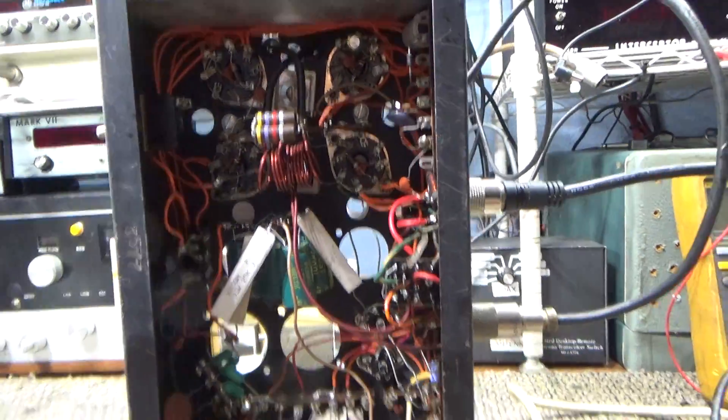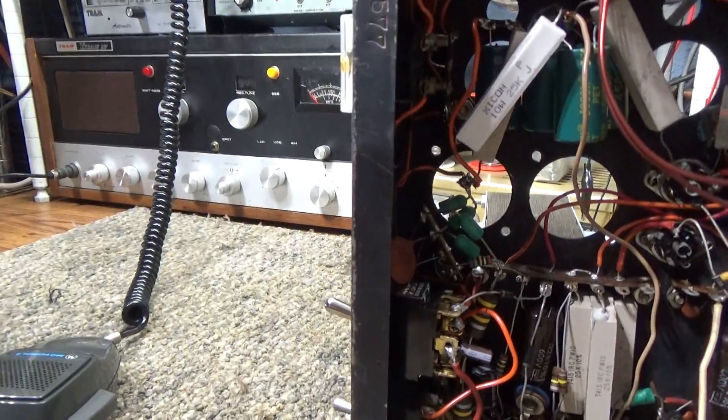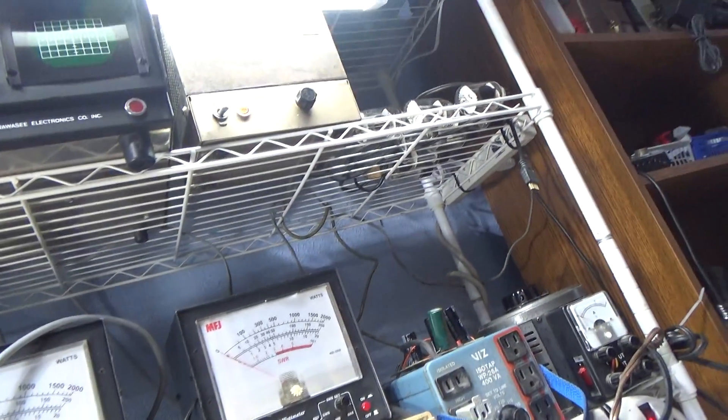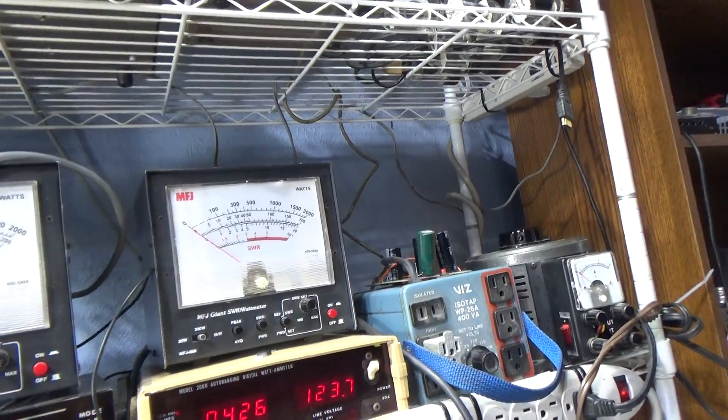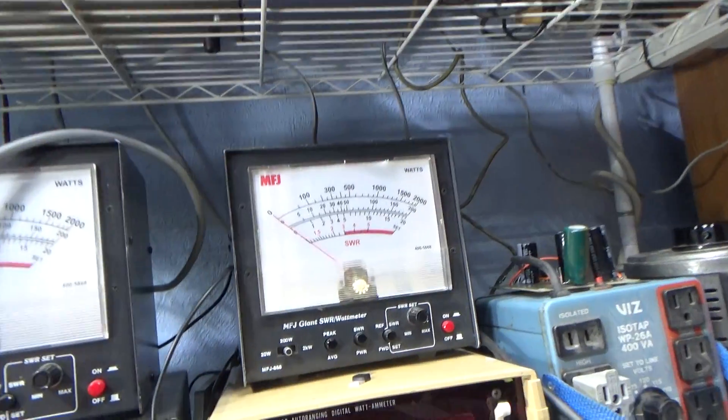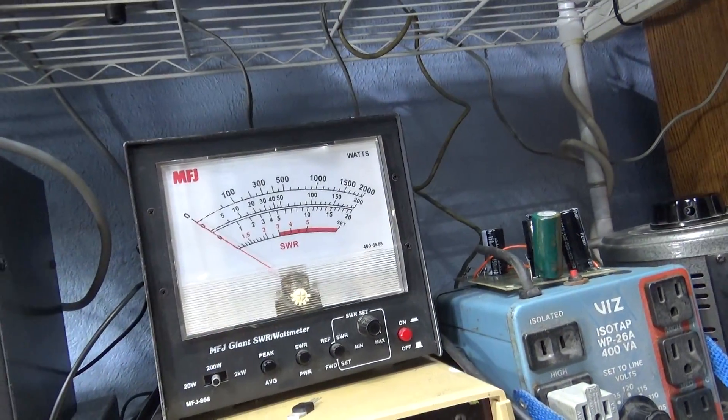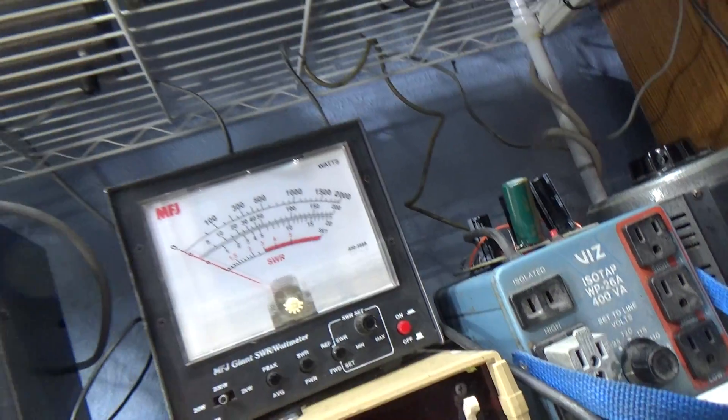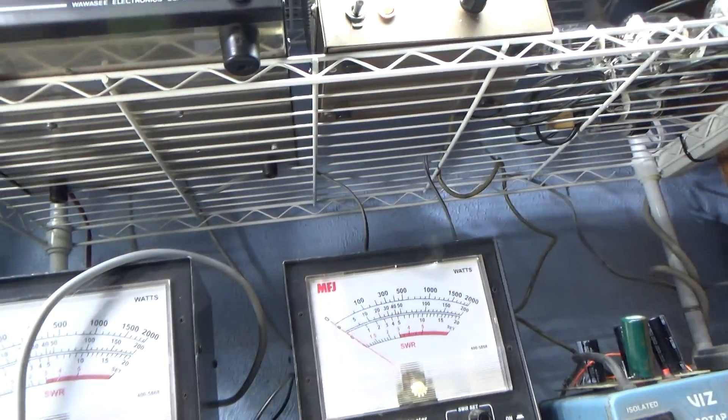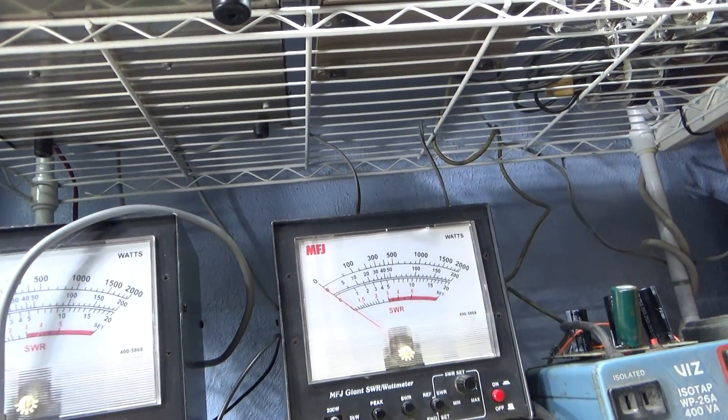We're on the 200 watt scale, the MFJ calibrated to a bird. Looks like we're on peak. Let's put it on average and see what she does.